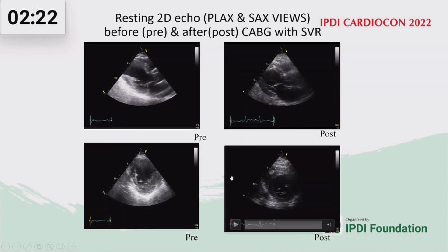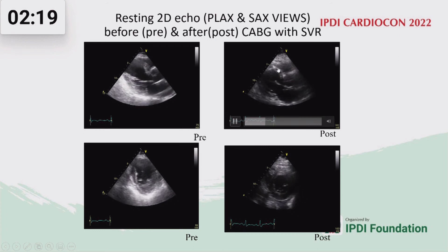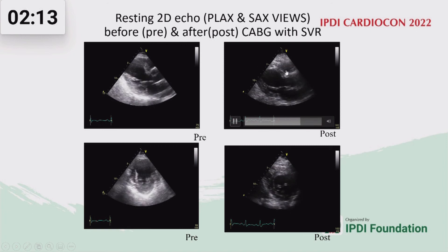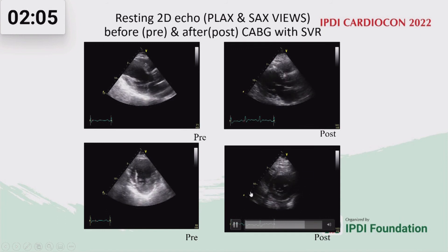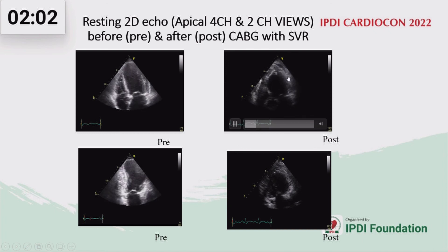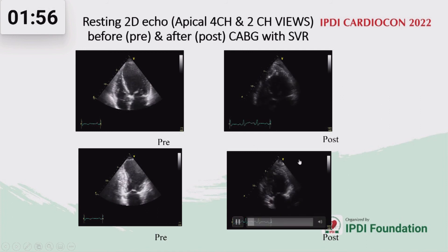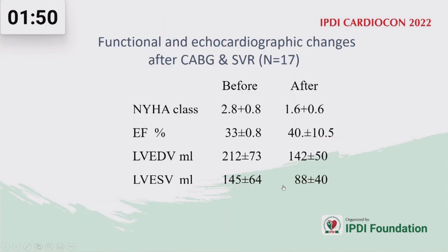This patient underwent SVR. The SVR patch (white patch) excludes non-viable segments and reduces LV size. After SVR and CABG, the short-axis view shows the LV becoming more rounded. Four-chamber and two-chamber views after CABG and SVR demonstrate placement of the SVR patch, reduction of LV end-diastolic volume, and improved wall motion and contractility. In this group, functional class, ejection fraction improved and end-diastolic and end-systolic volumes reduced.